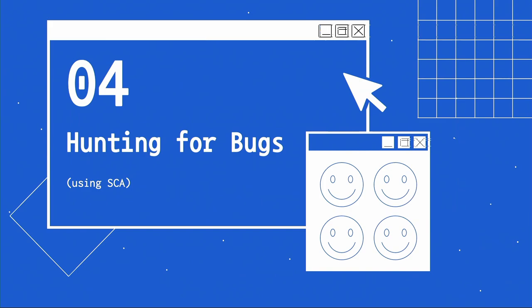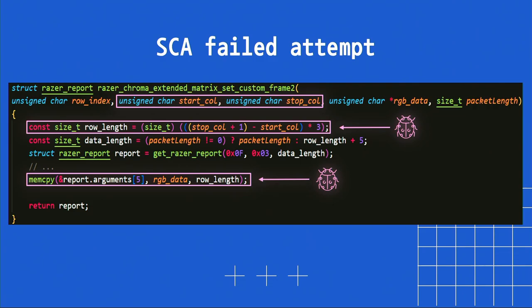Now let's go to the fun part. That memcopy vulnerability was very simple, and I wanted to see if I could find it faster with static code analysis. Unfortunately, the tools I used didn't actually find these vulnerabilities — I think because the tools didn't know that start and stop column were user-controlled. This driver was implemented via sysfs in Linux, and the tools didn't know how to parse the user-controlled parameters.